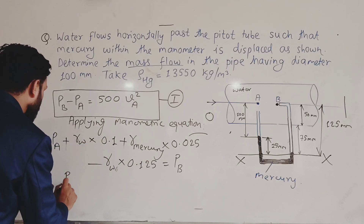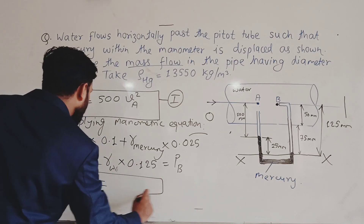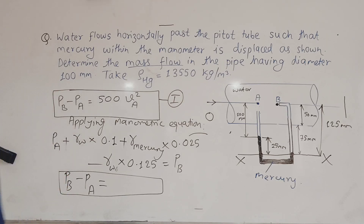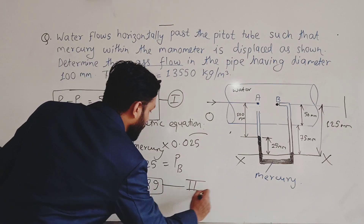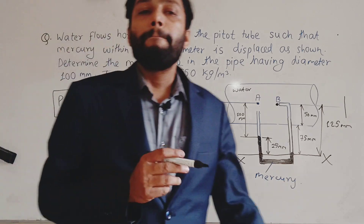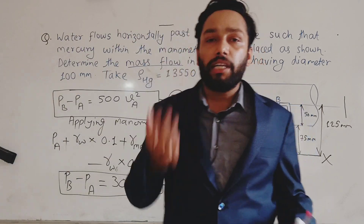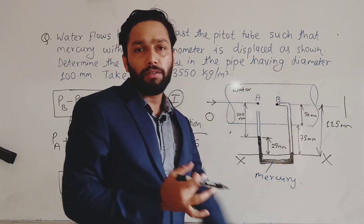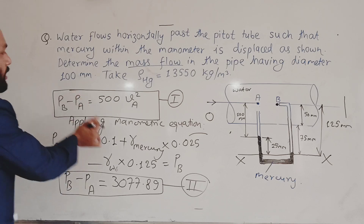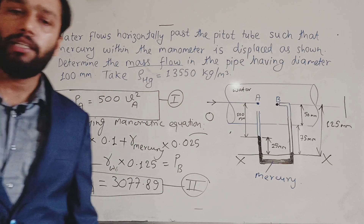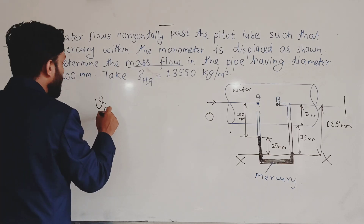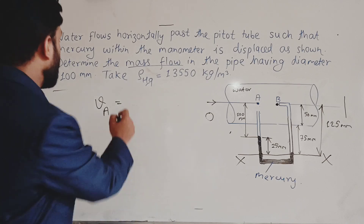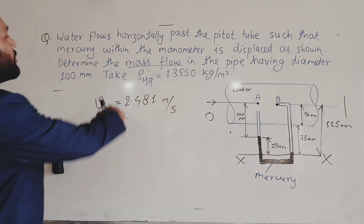Solving for P_B − P_A from the manometric equation gives 3077.89 Pa. This is Equation 2. Now equating Equation 1 and Equation 2: 500 v_A² = 3077.89, giving v_A = 2.481 m/s.